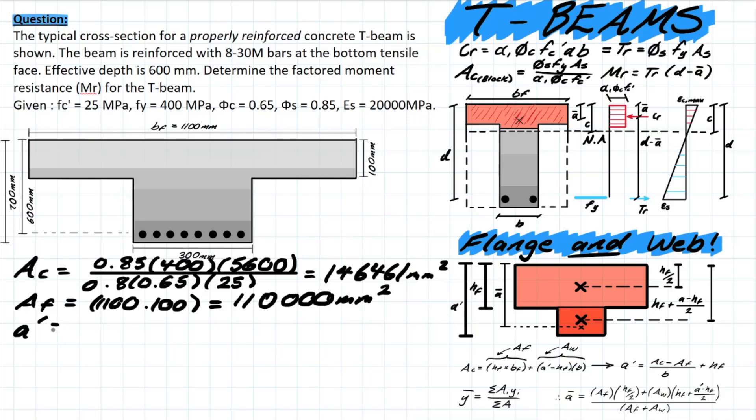Then you're simply plugging into this formula that has been rearranged to figure out what this a' value is. So a' is going to equal to your area of concrete total, 146,461 minus 110,000 millimeters squared, that's all over your b value which is your width of your web so 300, and we're adding 100, which leaves you with a value of 222 millimeters. And this a' once again is the total depth of your compressive block region.